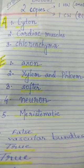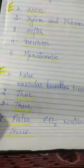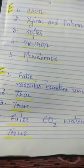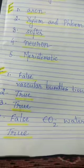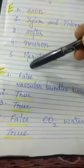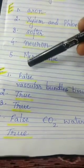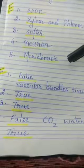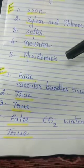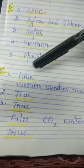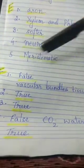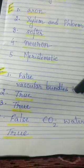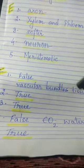Now let us move to subpart F: write true or false and correct the incorrect statement. First one: xylem and phloem are the vascular bundles. The answer is false. You will correct it by writing: xylem and phloem are the vascular tissues. So cut the word 'bundles' and write 'tissues'.